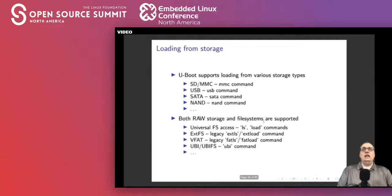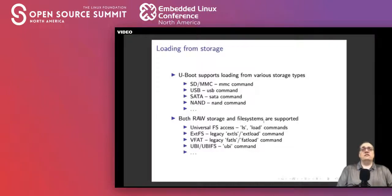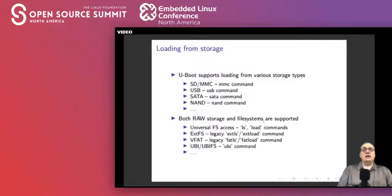Next are uBoot data loading commands. You can load from all sorts of different kinds of storage — SD cards, USB storage, SATA drives, NAND, and more. Both raw storage and file system access are supported. Supported file systems include DOS/VFAT, ext (Linux file system), UBI and UBIFS for raw NAND formats. SquashFS is not supported. Universal file system access commands like ls and load will auto-detect file systems and run the appropriate sub-commands.